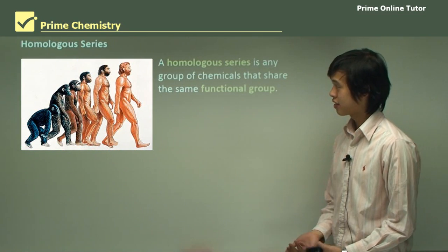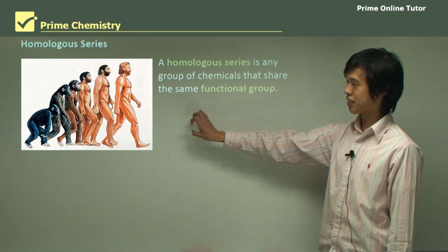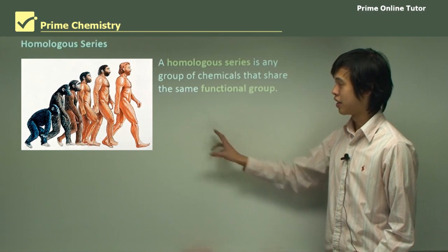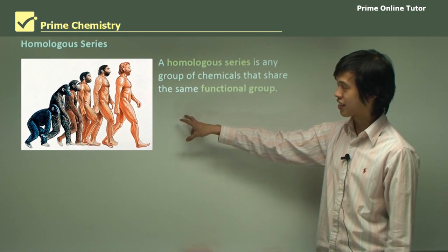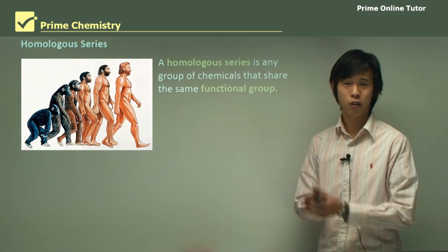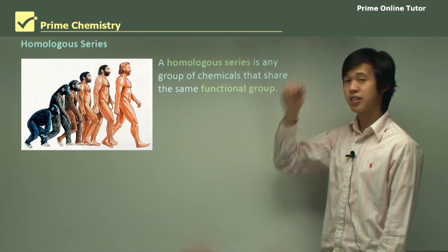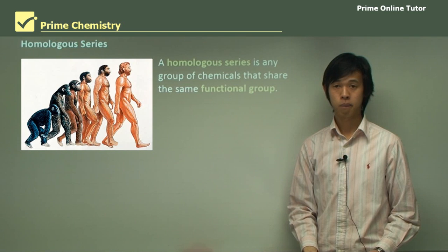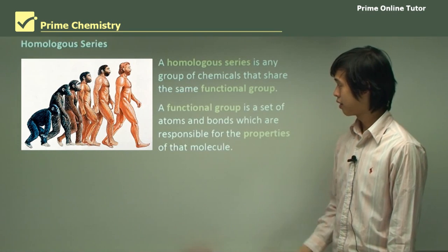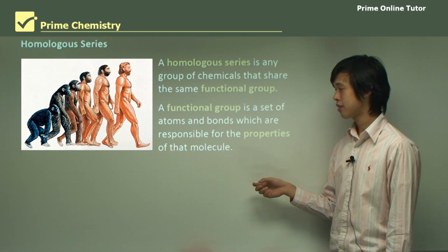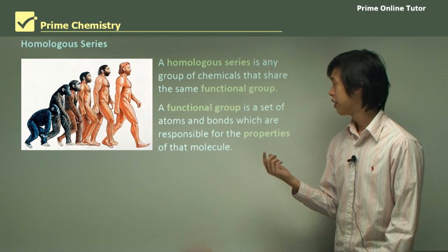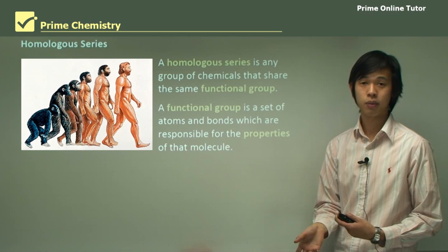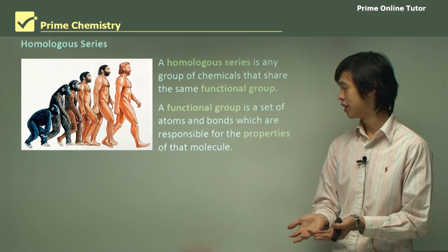First we need to talk about homologous series. The prefix HOMO always means similar or similar to. Here we have all of these ape-looking things eventually evolving into man. They all have similar properties, so we call them a homologous series. In chemistry, a homologous series means a group of chemicals that share the same functional group. A functional group is a set of atoms and bonds which are responsible for the properties of that molecule.